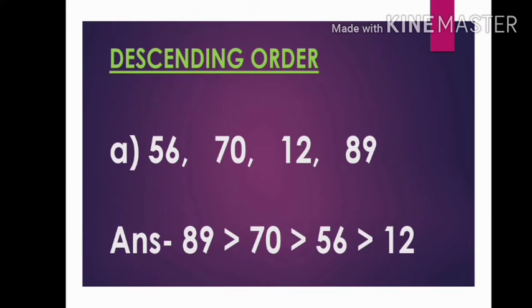Let us see the example. Here are some numbers 56, 70, 12, 89. We will take the bigger number first which is 89 and then smaller than 89 is 70 then 56 and then 12 which means from big to small.